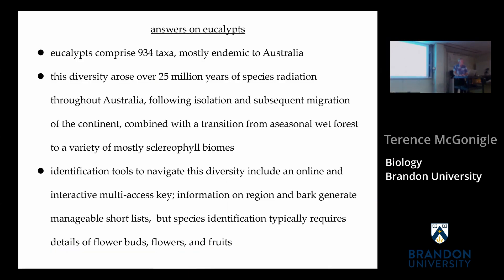To summarize the whole story for eucalyptus: we've got 934 taxa, mostly endemic to Australia. This diversity arose over 25 million years of species radiation throughout Australia, following tectonic isolation and subsequent aridification of the continent, combined with the transition from a-seasonal wet forest to a variety of mostly sclerophyll biomes, as per the work of CRISP and others. Identification tools to navigate this diversity include an online interactive multi-access key. Information on region and bark generates manageable shortlists, but species identification typically requires flowers and fruits.